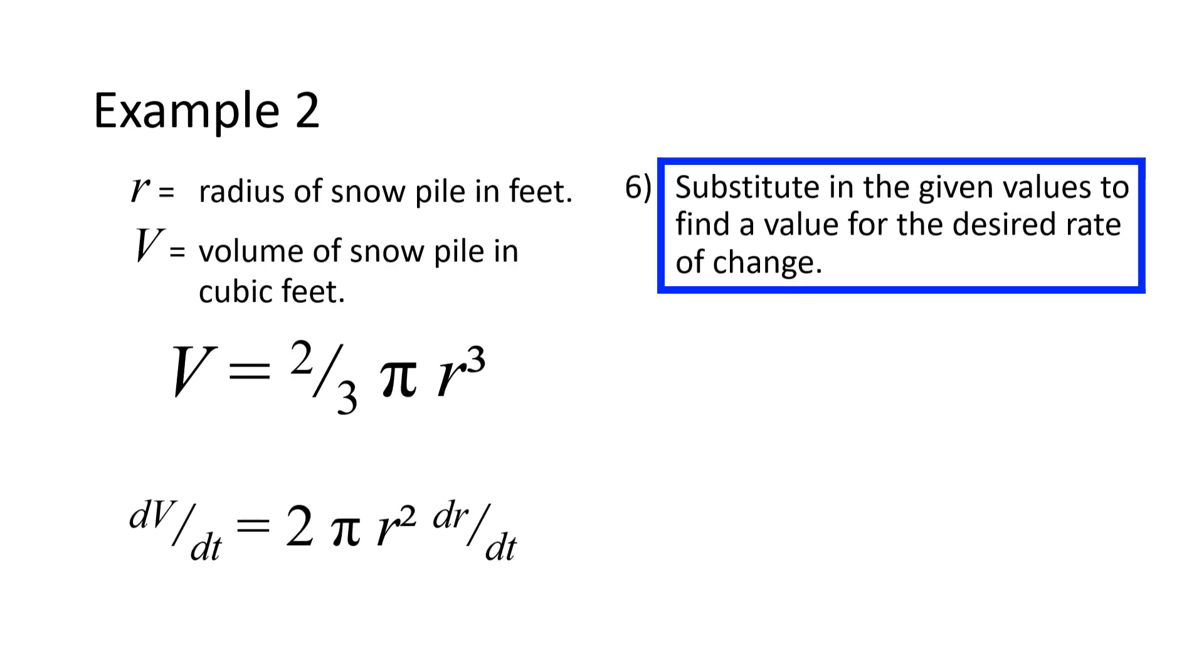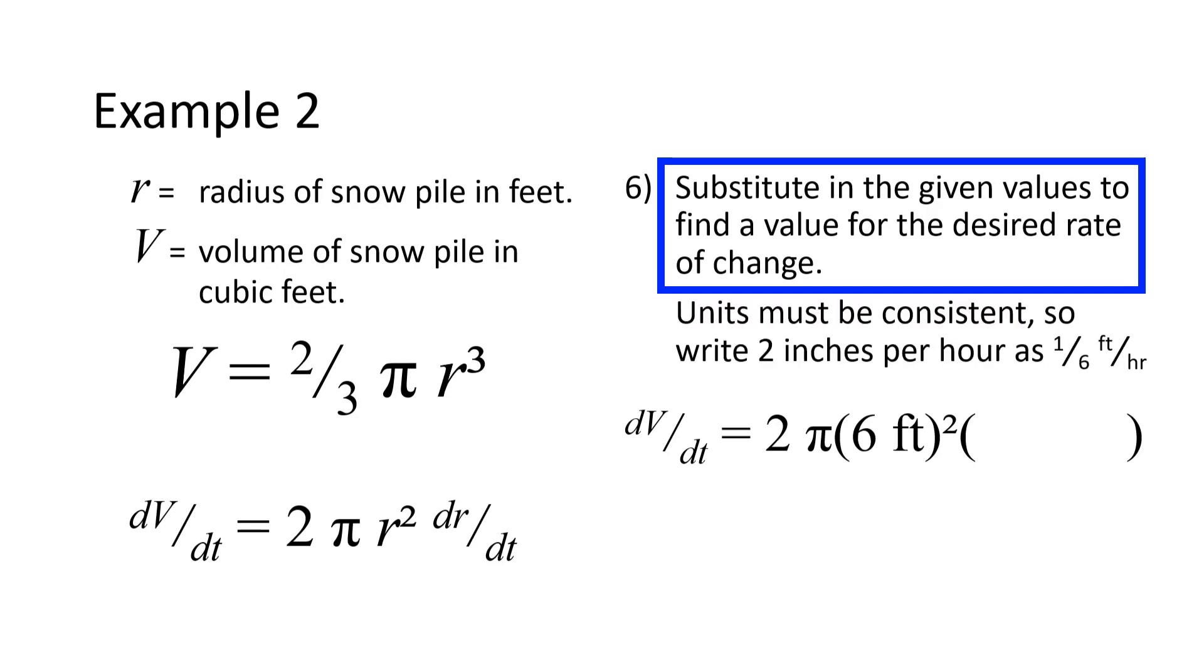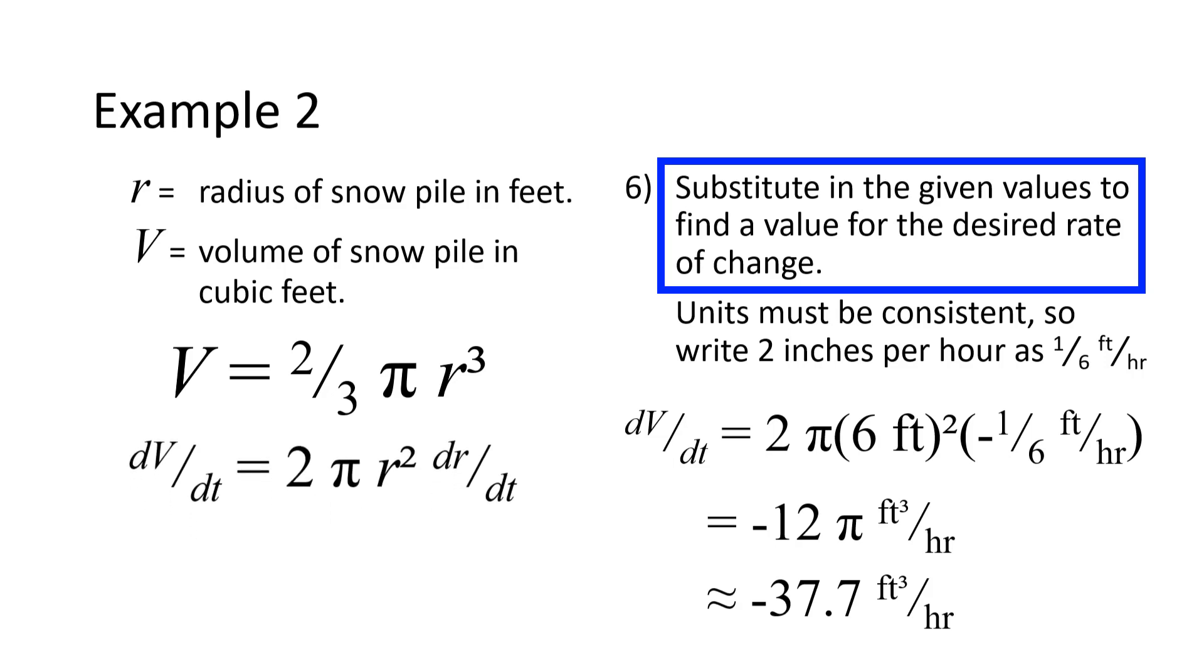Now, we substitute the given values into this equation to get a value for dV/dt. At the moment of interest, the radius is 6 feet. To substitute in the rate of change of radius, we need to convert our 2 inches per hour to 1/6 of a foot per hour. That puts all lengths in feet, so we have consistent units. Note that dr/dt is negative because the radius is getting smaller. This gives a negative rate of change for the volume, which makes sense because the volume is also getting smaller.